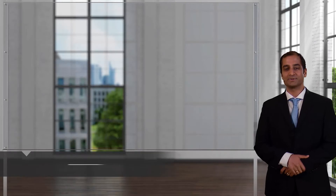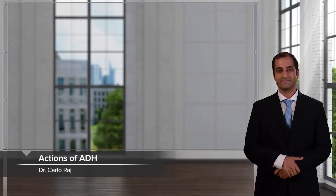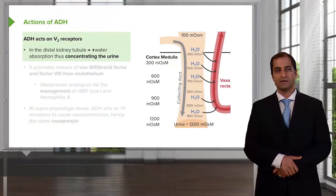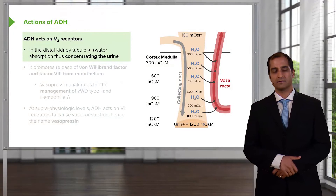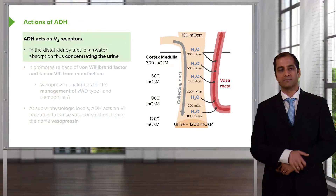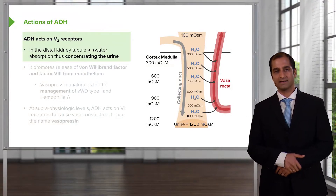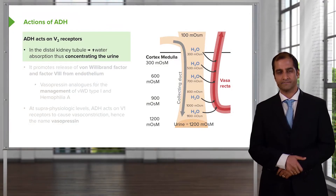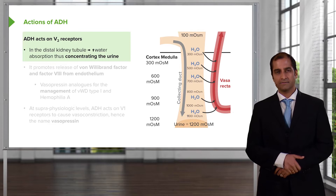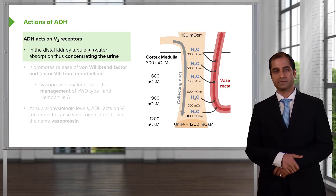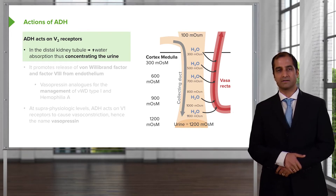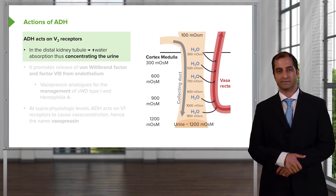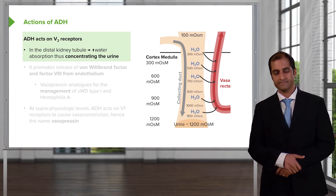Let's take a look at the posterior pituitary. Our first posterior pituitary hormone is ADH. Even though there are only two hormones we'll be addressing here with the posterior pituitary, the clinical applications of this are massive, as you shall see.